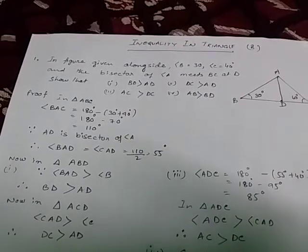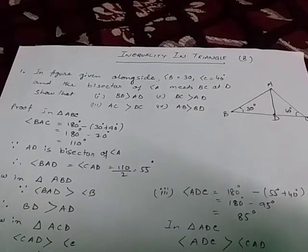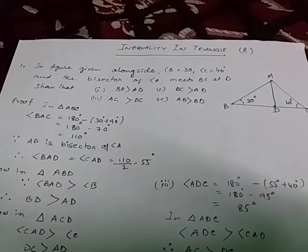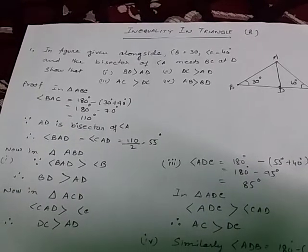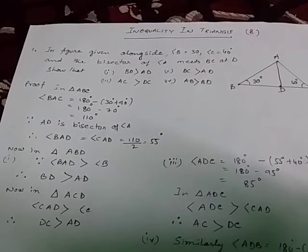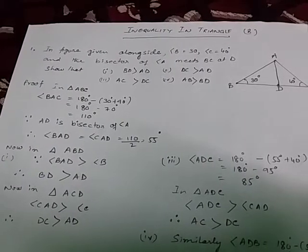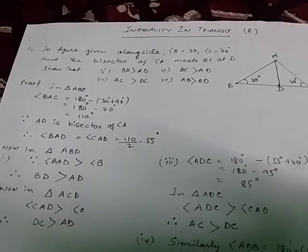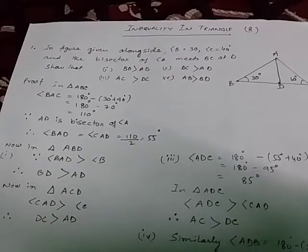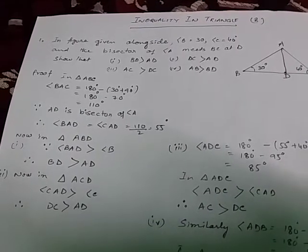Good morning students. Today also inequality in triangle. In figure given alongside, angle B equal to 30 degree, C equal to 40 degree, and the bisector of angle A meets BC at D. You have to show that BD is greater than AD, DC is greater than AD, AC is greater than DC, and AB is greater than BD.